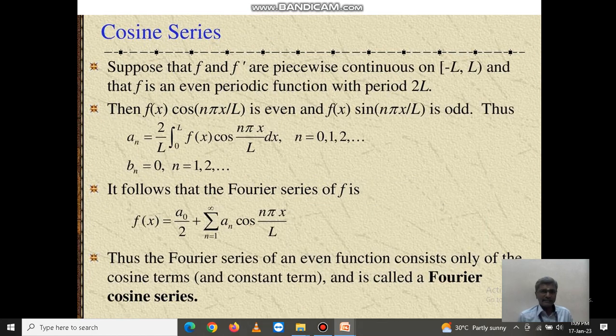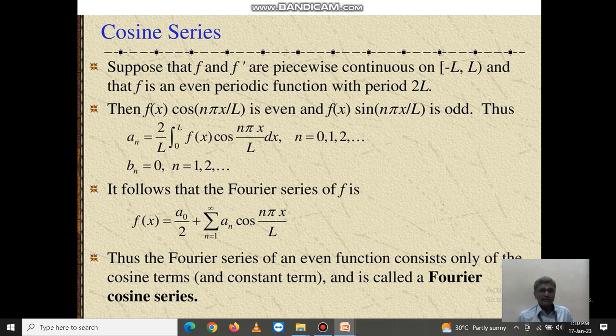Next, cosine series. Suppose f and f' are piecewise continuous on the interval minus l to l, and that f is an even periodic function with period 2l. Then f(x) cos(n pi x over l) is even and f(x) sin(n pi x over l) is odd. Thus in the cosine series, bn equals 0, and only a0 and an are available.